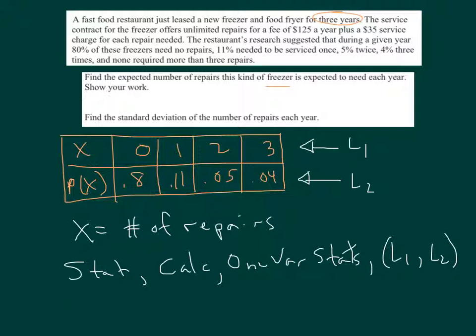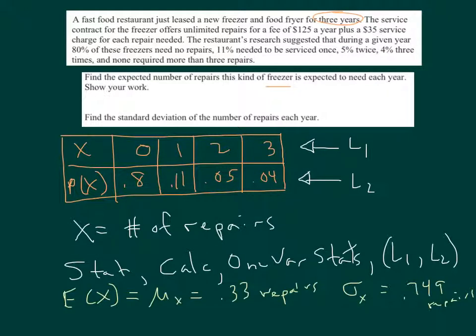Let's take a look at what you should have gotten. I got an expected value of X, so the expected number of repairs per year is 0.33 repairs, and a standard deviation of 0.749 repairs.